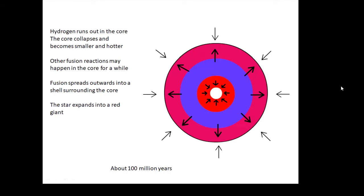It will stop being stable when the hydrogen in the core runs out. And when the hydrogen in the core runs out, a few things are going to happen. Firstly, the core will collapse and become a lot smaller and a lot hotter.